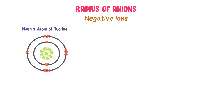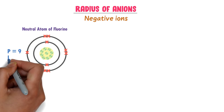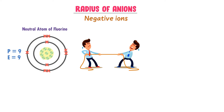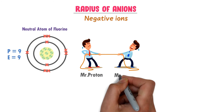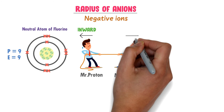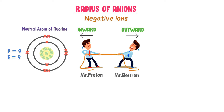For example, consider the fluorine atom. In a neutral atom of fluorine, there are 9 protons and 9 electrons. There is always a tug of war between protons and electrons — protons pull the electrons in the inward direction and electrons tend to move in the outward direction. Since there are 9 protons and 9 electrons, the electrons revolve around the nucleus at a suitable position.